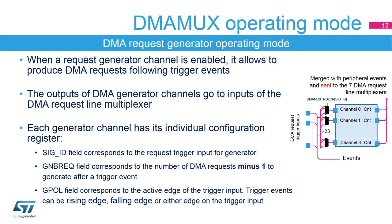On its output, the DMA request generator produces DMA requests following trigger events on DMA request trigger inputs. The DMA request generator has four channels. DMA request trigger inputs are connected in parallel to the four channels. The outputs of DMA generator channels go to inputs of the DMA request line multiplexer. Each DMA request generator channel has an enable bit. The DMA request trigger input for a generator channel is selected through the SIGID field of the corresponding generator channel's control register. Trigger events on a DMA request trigger input can be rising edge, falling edge, or either edge, selected through the PALL field of the corresponding generator channel's control register.